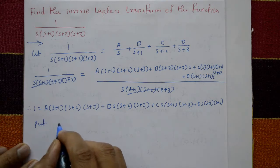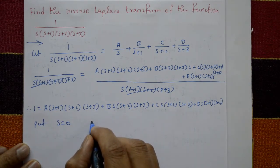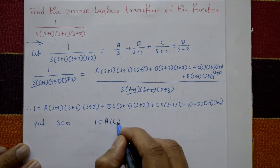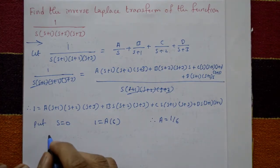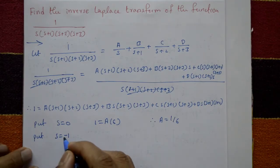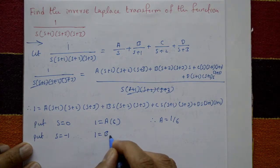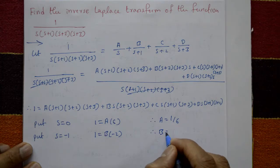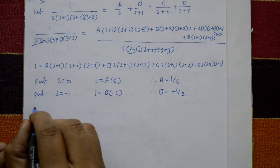Now find A, B, C, D by substitution. Put s equal to 0: 1 equals A into 6, therefore A equals 1 by 6. Put s equal to minus 1: 1 equals B into minus 2, therefore B equals minus 1 by 2.